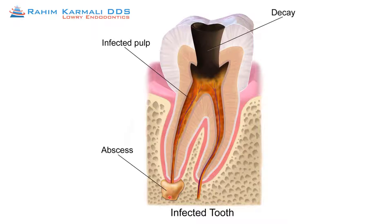Now when this happens it could be either very, very painful and you know it's there — there's pain and swelling, and the tooth is tender to biting, tender to tapping, tender to pushing with your tongue. On the other end of the spectrum you could be completely unaware that there's an infection in your jaw. You can go for years and be completely asymptomatic, and that's one of the important things about regular checkups with your general dentist and regular x-rays to pick up these types of infections before they get too big or too bad.